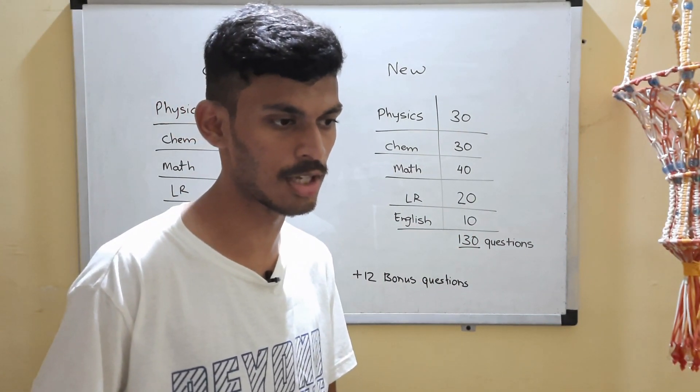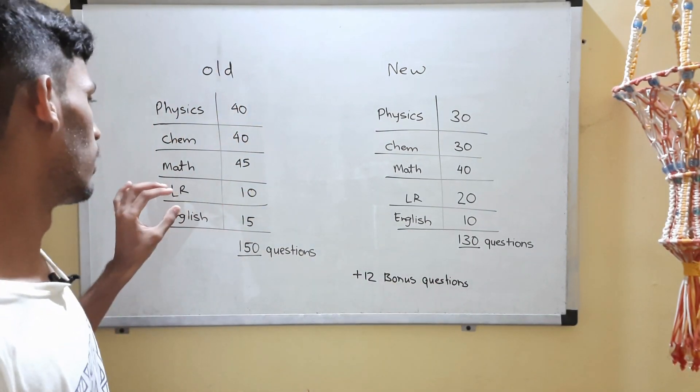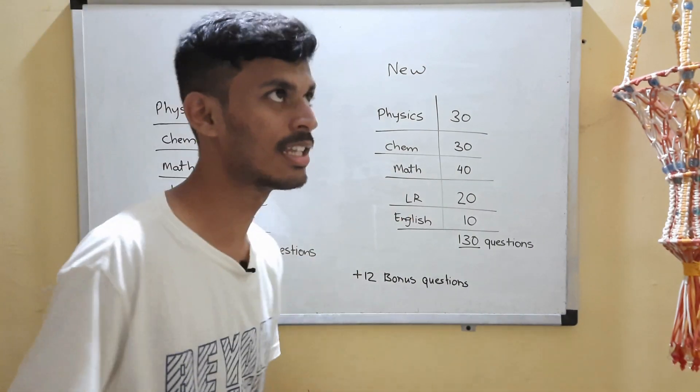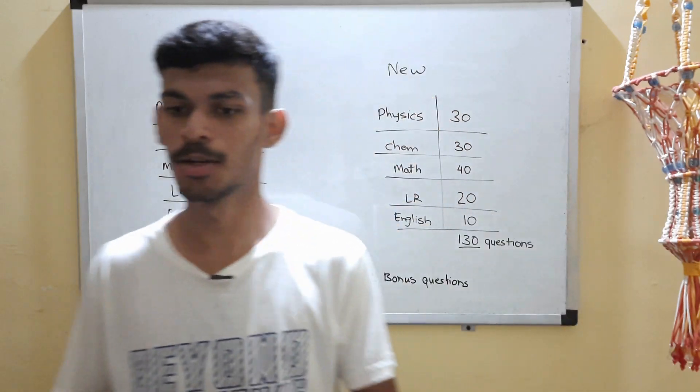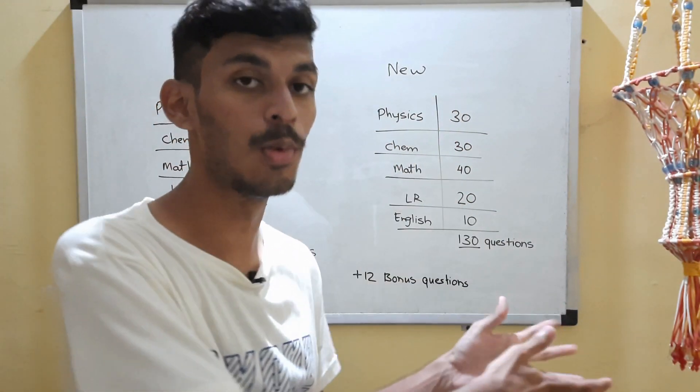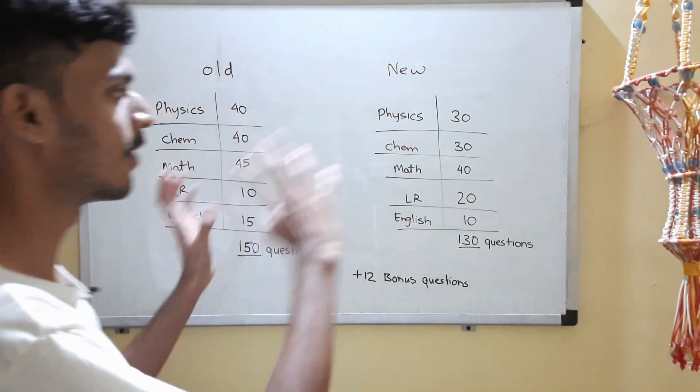The downside here is that the number of questions in Logical Reasoning is doubled. Again, if you see the older patterns, if you had two visual questions, now in the new pattern you'll have four visual questions. So everything will double from the old pattern to the new pattern.